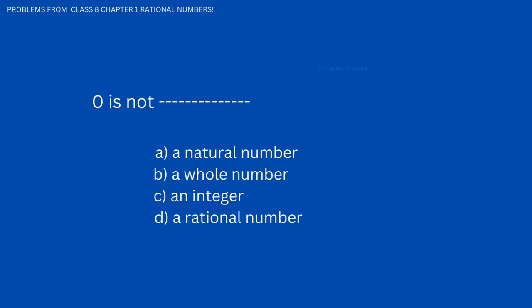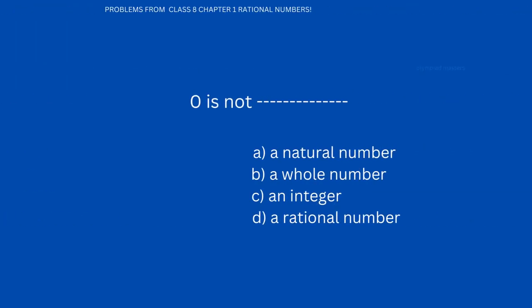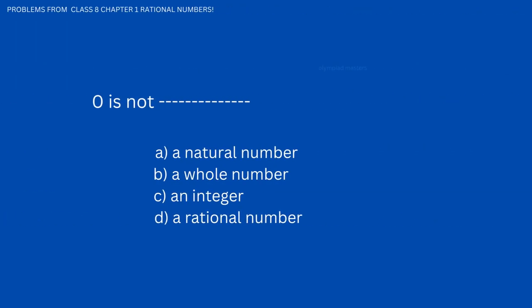First problem: 0 is not dash. Options are: A) a natural number, B) a whole number, C) an integer, D) a rational number. This is a multiple choice question.